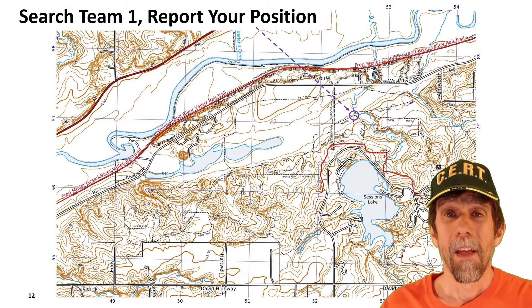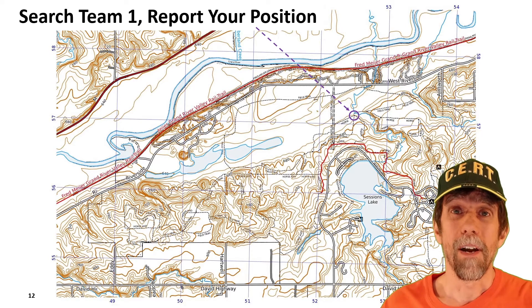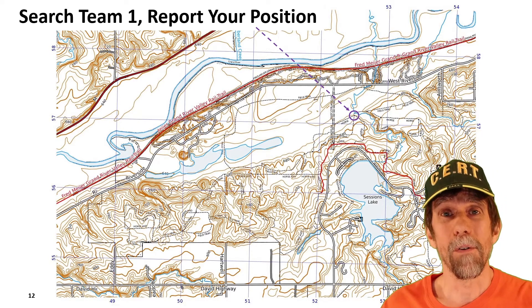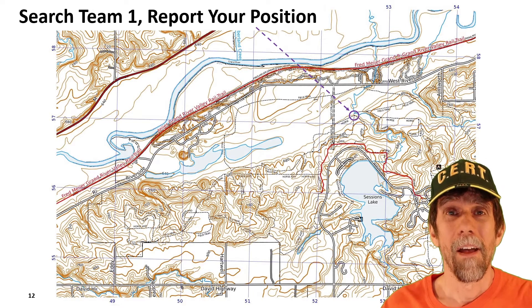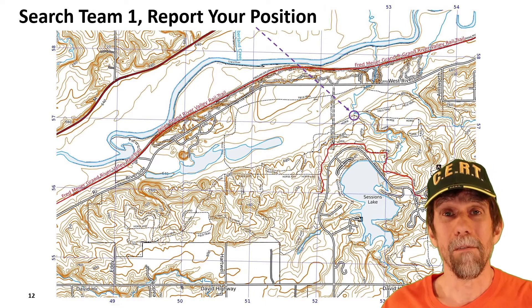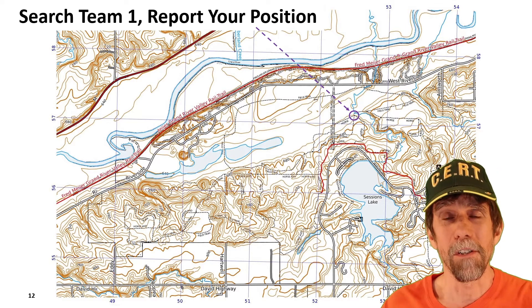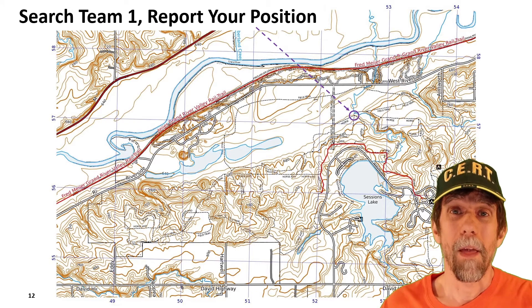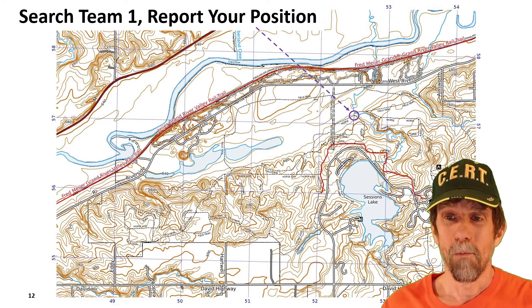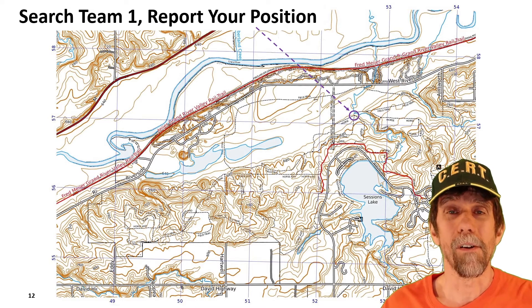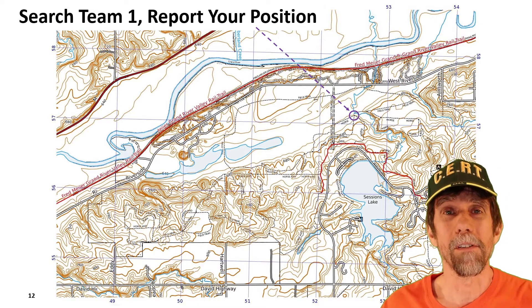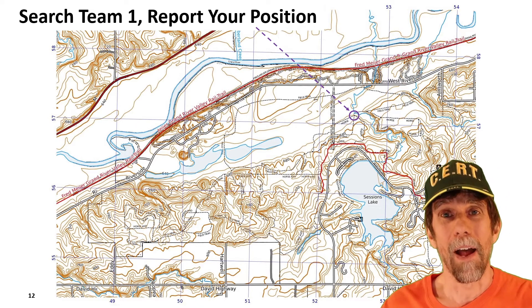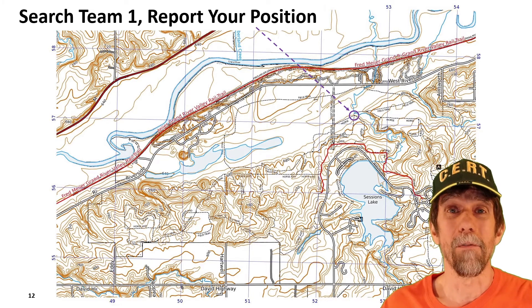Now let's do an exercise. Suppose you are on search team 1, located at the trail intersection marked on this map in the purple circle. Incident command calls you on the radio and says, 'Search team 1, report your position.' At this point I invite you to stop the video and figure this out yourself — work out using the techniques I just showed you where this location is and what the SAR coordinates are. Pause the video, work that out, and then resume and let's compare your answers to mine.